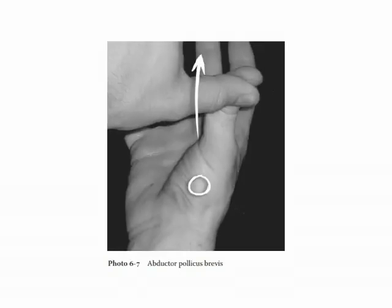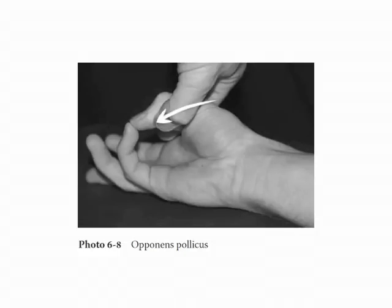Now stretch your thumb across your palm and touch the tip of your little finger to demonstrate opponens pollicis. The median nerve provides thumb opposition, and the ulnar nerve provides opposition of the little finger.